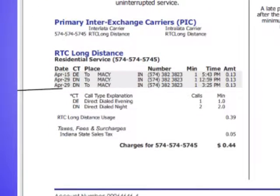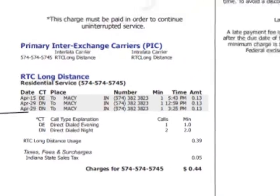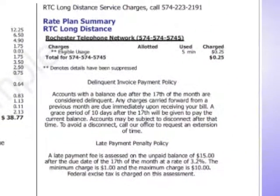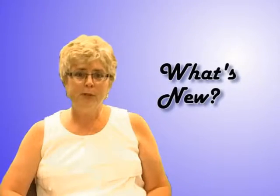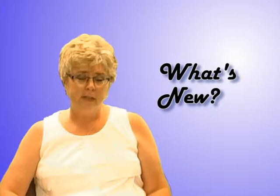This section lists your long distance carrier. RTC long distance customers will see a list of all non-rated calls in this section. If you have a calling plan, these are listed over here. The last portion of the bill lists our delinquent invoice payment and late payment penalty policies. Thank you for your time. We hope you like our new look.